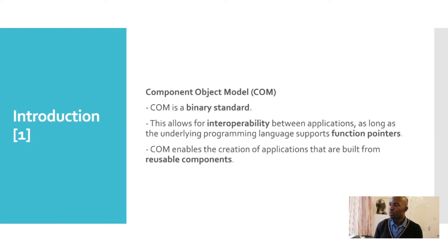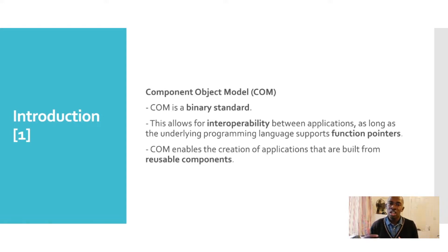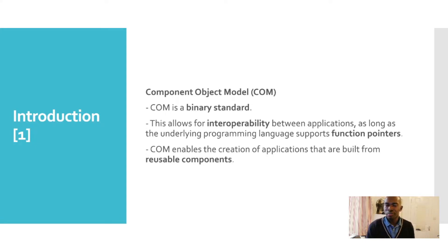The Component Object Model. COM is a binary standard — so it's at the binary level. It kind of circumvents the complexities of higher levels because it is literally at the binary standard. This allows for interoperability between applications as long as the underlying programming language supports function pointers. This is a gentle introduction into the topic.